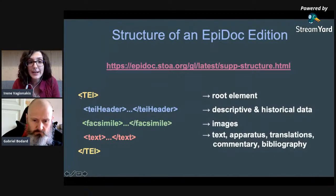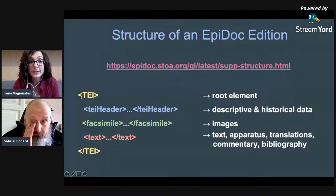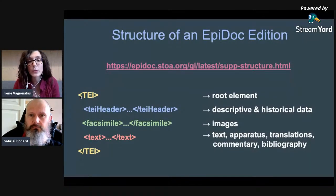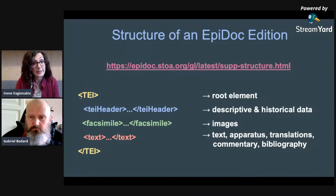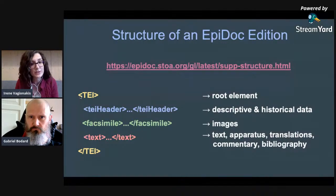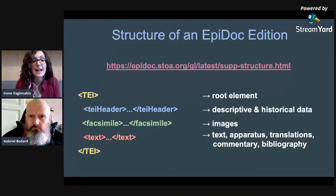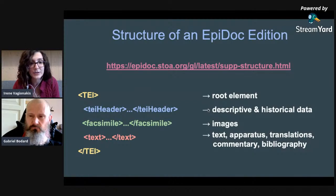So we have the TEI element as the root element including everything, the TEI header for the descriptive and historical data, facsimile — which could also be omitted if not necessary — for the images, and the text for the text, apparatus, translations, commentary and bibliography.